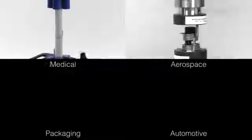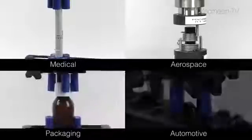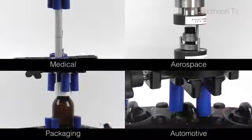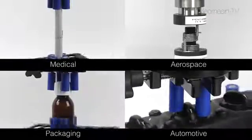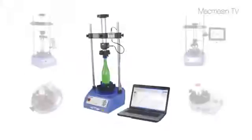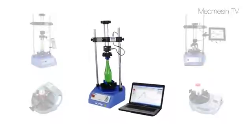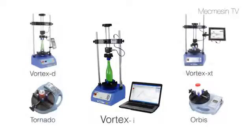The Vortex-i finds applications in all industries, from testing an insulin pen to checking an automotive rotary switch. It's just one of the Mecmesin family of torque measuring instruments which include hand-operated digital torque testers and console-controlled systems.